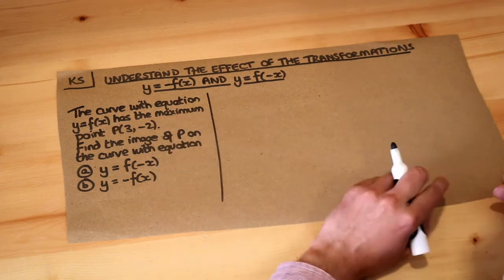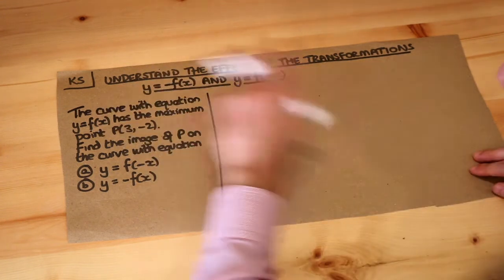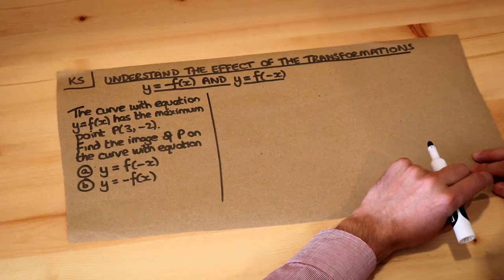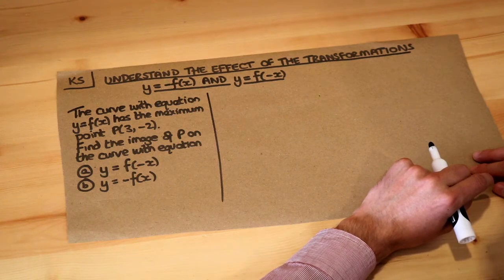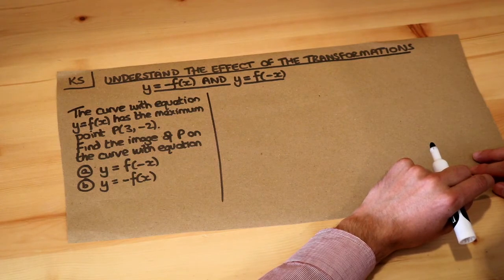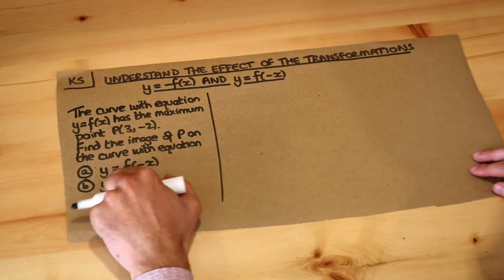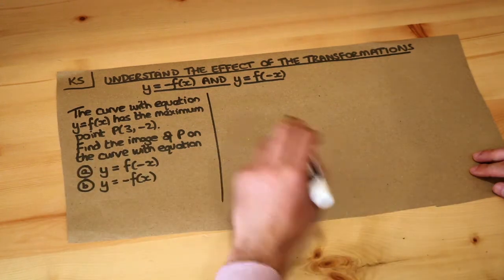So we've got this question: the curve of equation y equals f of x for some unknown function f has the maximum point p(3, -2). Find the image of p on the curve with equation y equals f of minus x and y equals minus f of x.